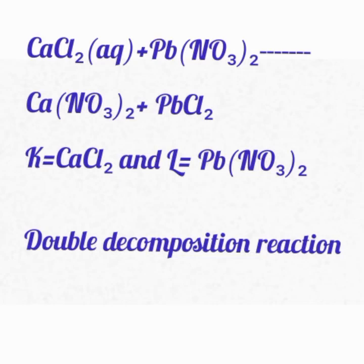I'm going to explain everything that has to do with the practical. You will be supplied solution K and solution L. Solution K happens to be a solution of calcium chloride, that is CaCl₂. Solution L is lead nitrate, that is Pb(NO₃)₂.